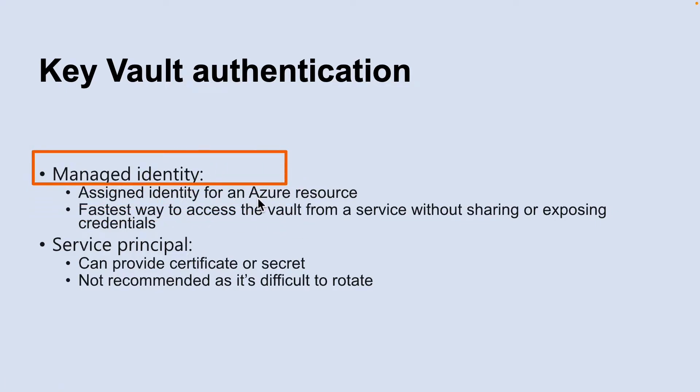Let's look into managed identity first. When you deploy an app on a virtual machine in Azure, you can assign an identity to your virtual machine that has access to Key Vault. You can also assign identities to other Azure resources. The benefit of this approach is that the app or service isn't managing the rotation of the first secret — Azure automatically rotates the identity.